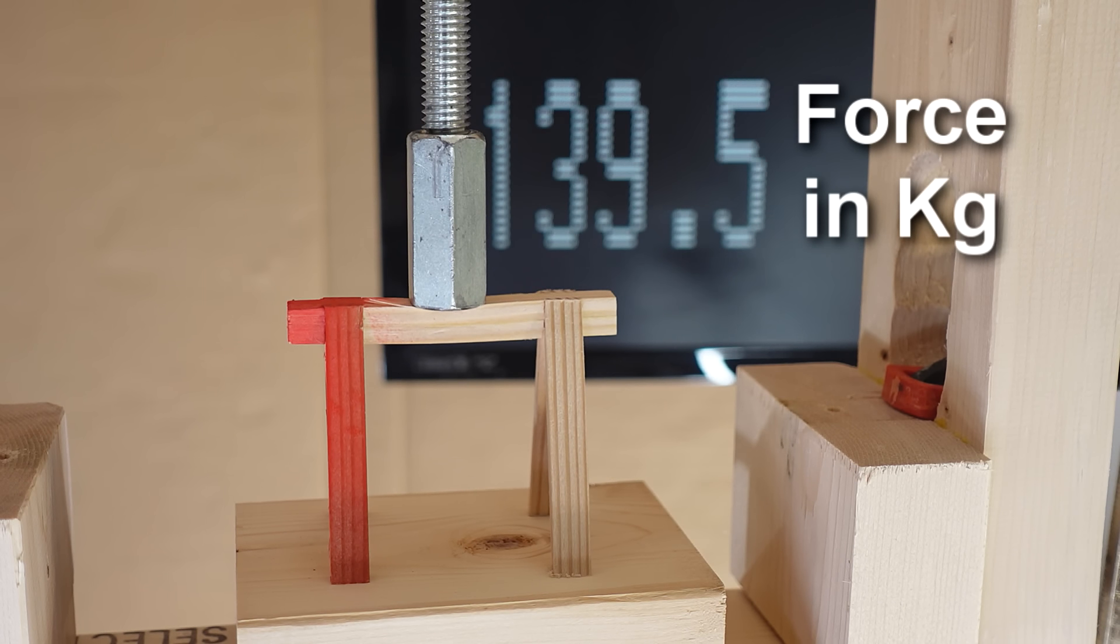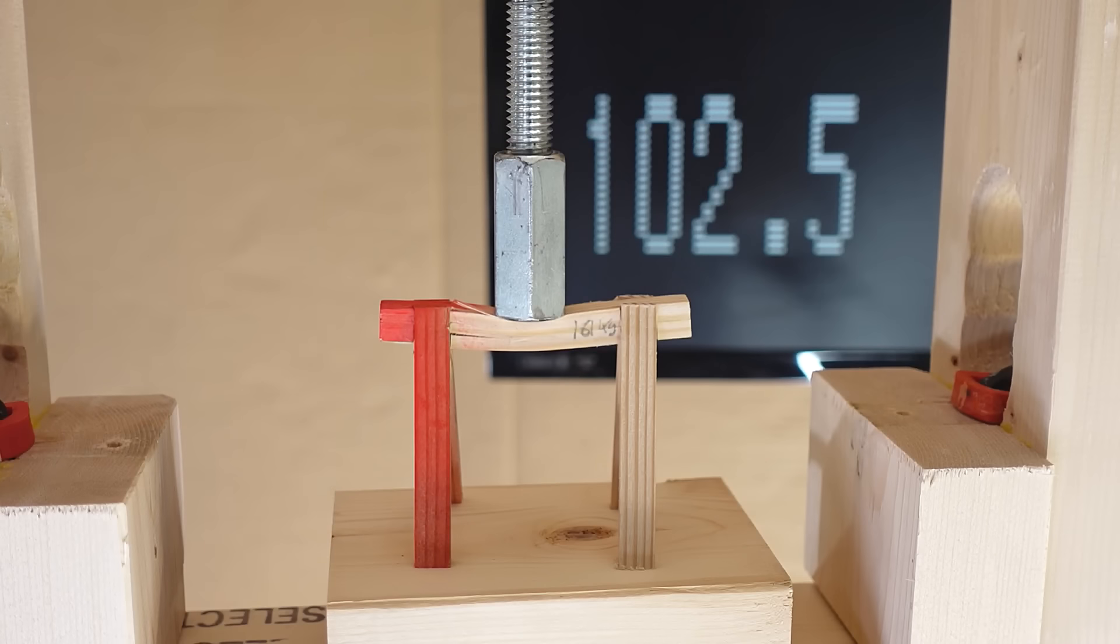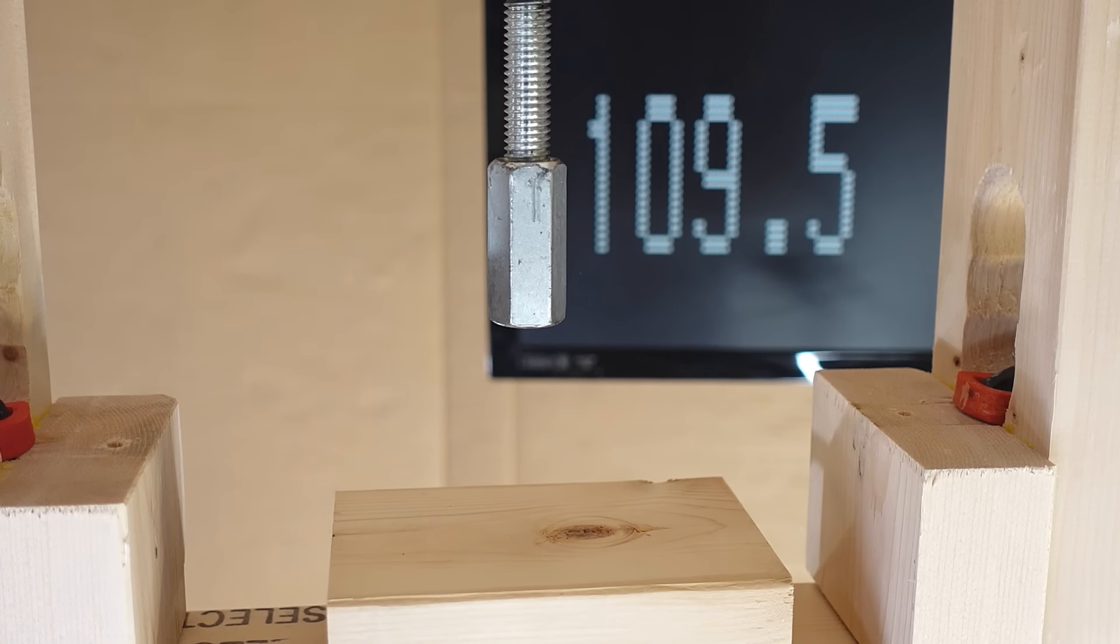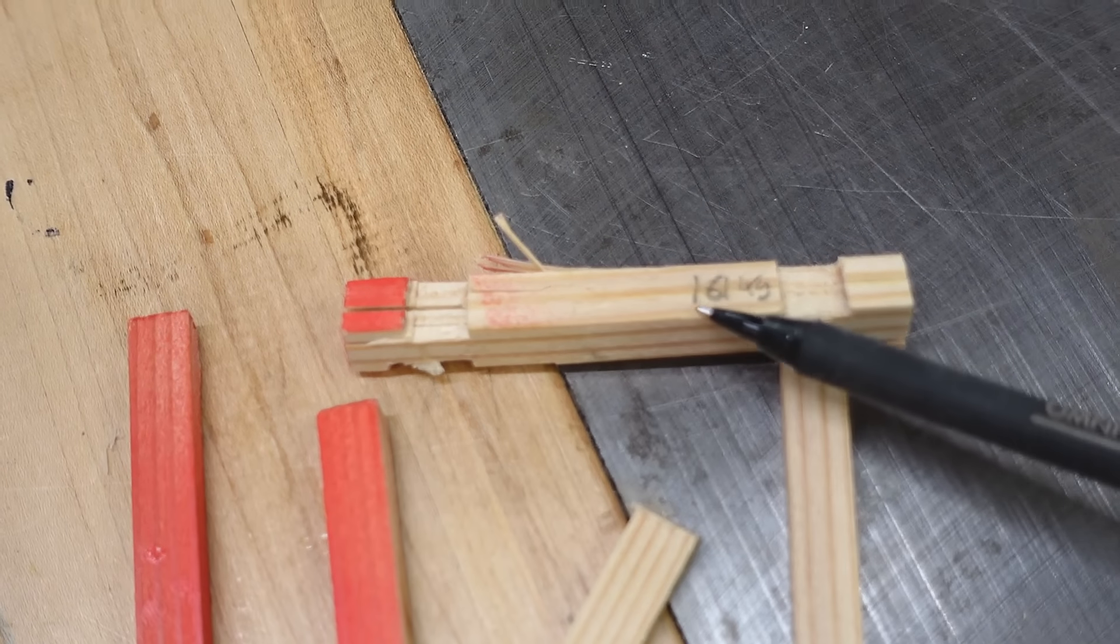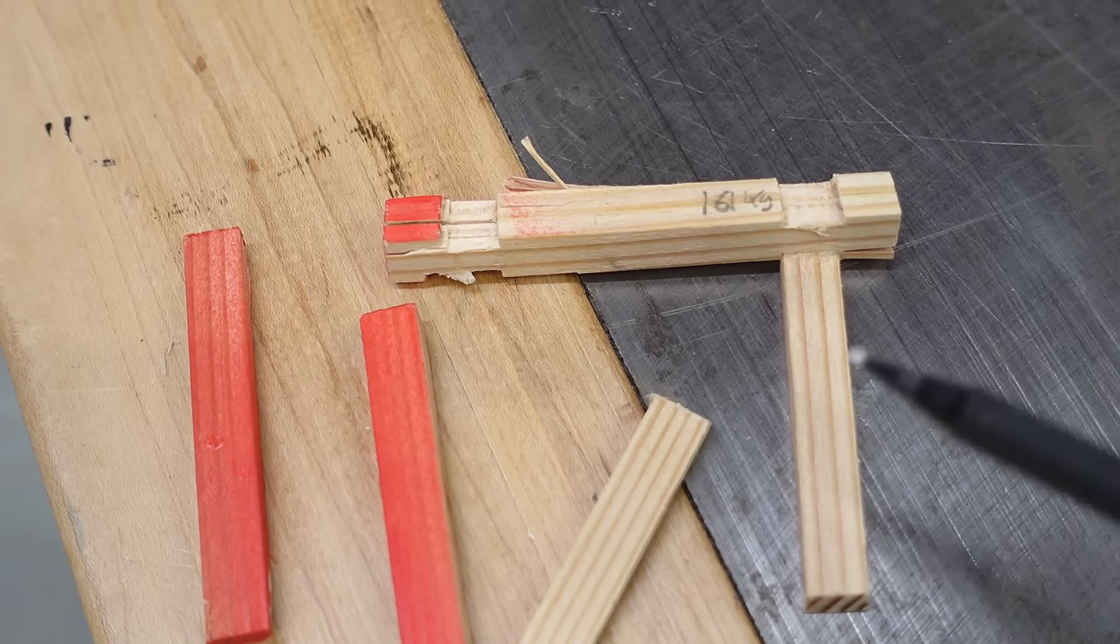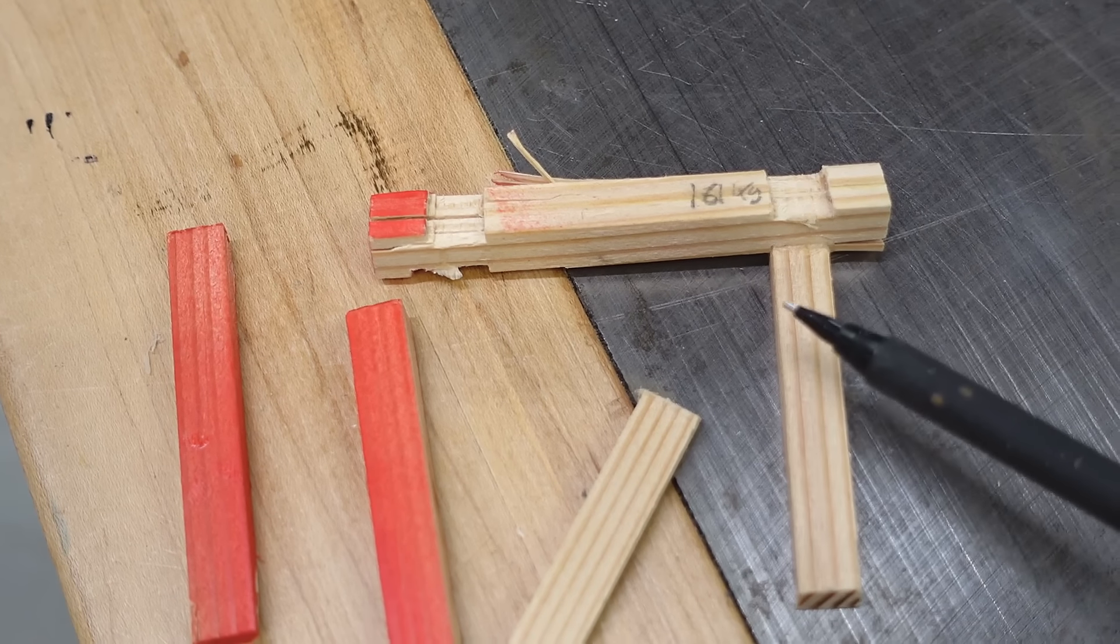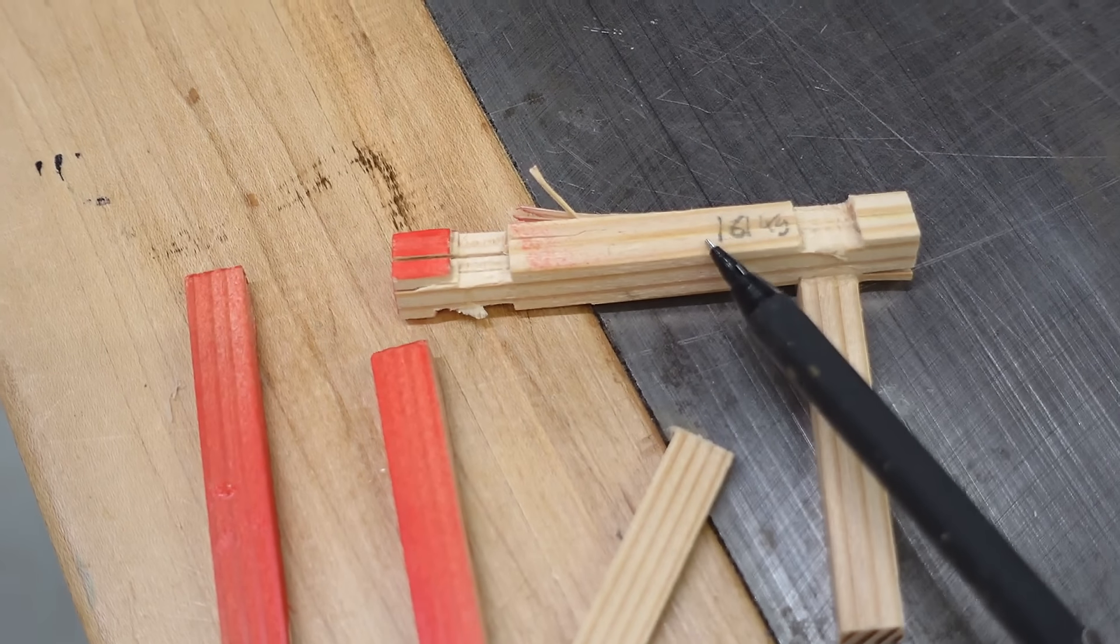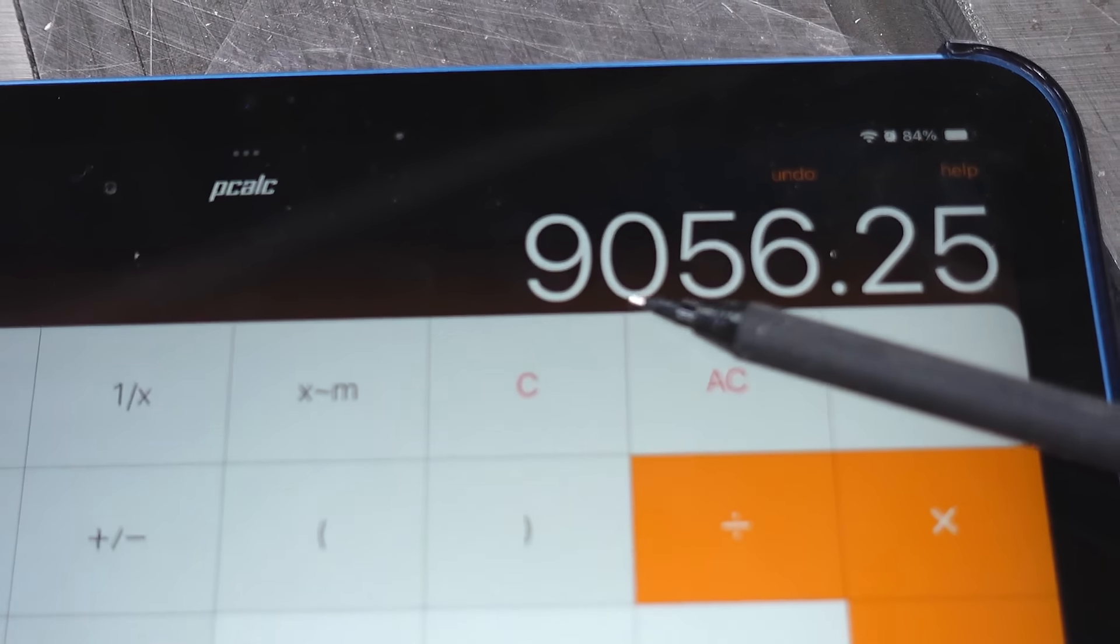And it seems the beam is failing here. But that looks disappointing, so I think I'll change the code to test until it's completely broke. There we go. Ultimate fail strength was 161 kilograms, and that is 1 over 7.5 scale, which means this should be about 1/7.5 squared. So basically multiply that by 7.5 squared, and we get 9,000.